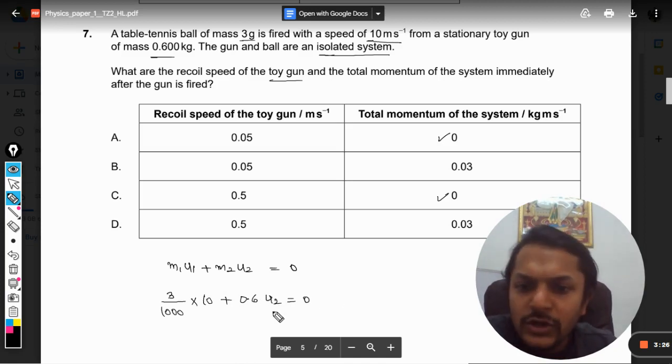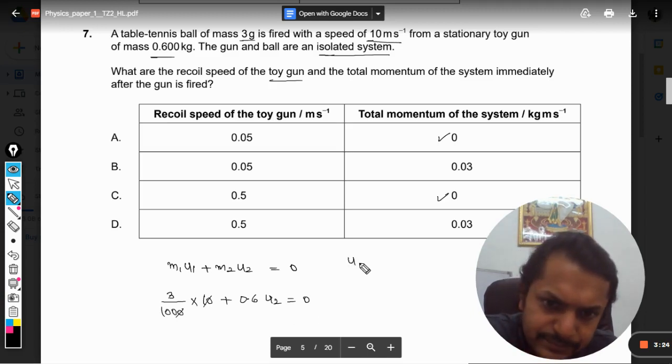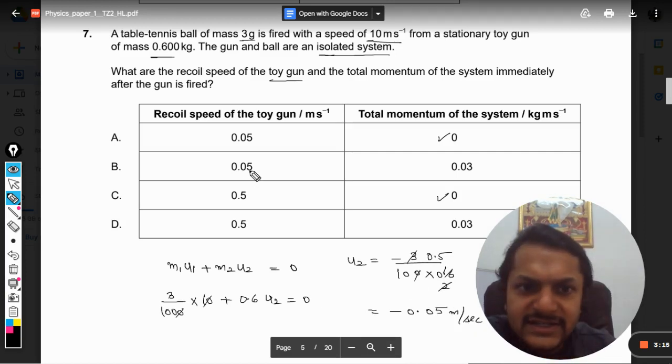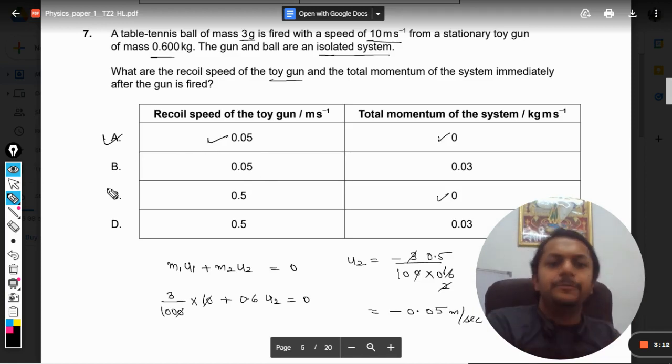Equal to 0, so this will become u2 equal to minus 3 divided by 100 into 0.6, and it will become 0.5, so it is minus 0.05 meters per second. So our answer should be B.